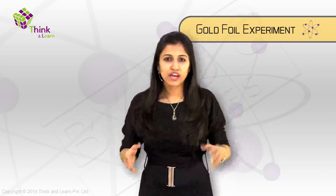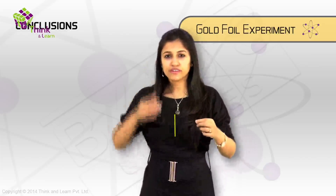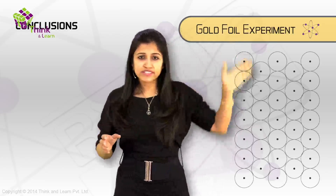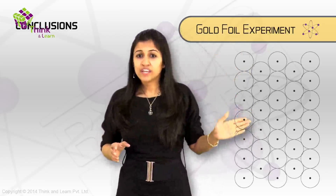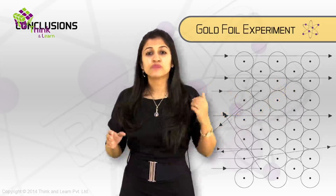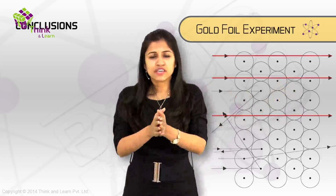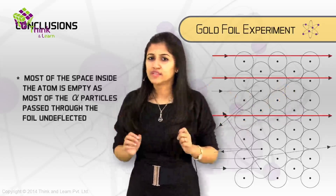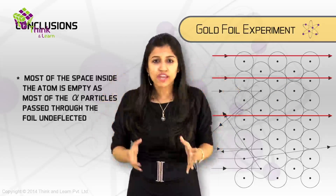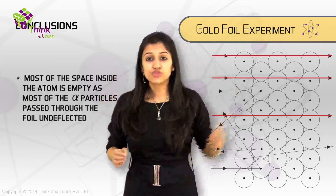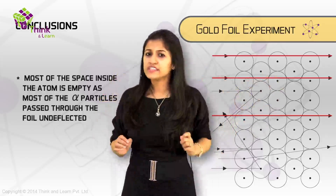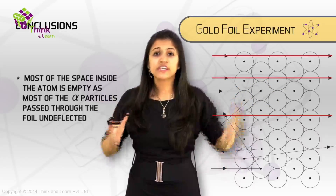Now let's look at the very important conclusions they came to. Looking at the gold foil from the top — really, really thin, around 1000 atoms thick — when the alpha particles were shot through, most of them came through the other side. So Rutherford reasoned that most of the atom must be empty space, or something so light that it was very easy for the alpha particles to go right through them — not very dense, making it very easy for the alpha particles to shoot through.